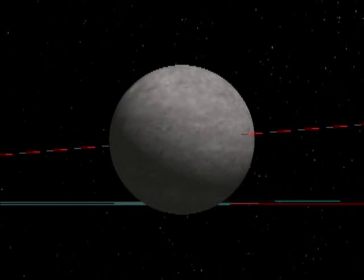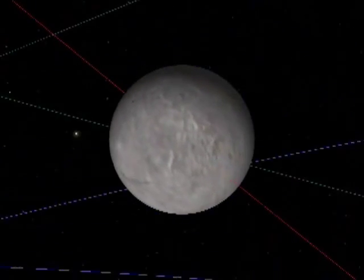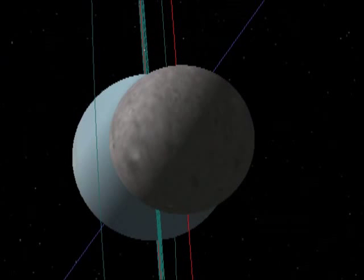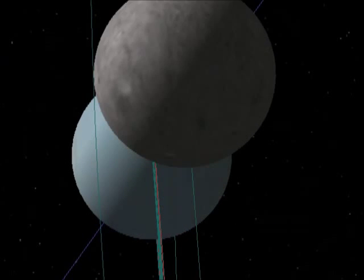Next one, Umbriel. This is the darkest one. It's possibly covered in something carbony, or possibly thiols. As you can see, Uranus is quite large in its sky.